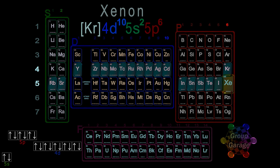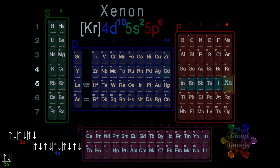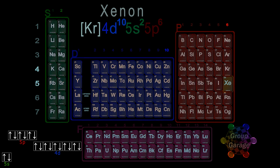Also provided in the lower left are the electron spin orientations for xenon — the orbital diagrams for the S, D, and P subshells.